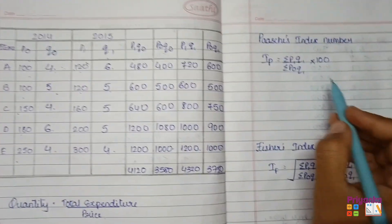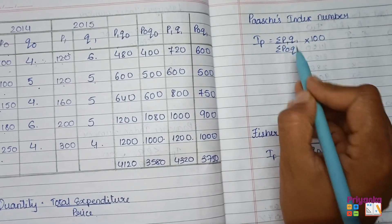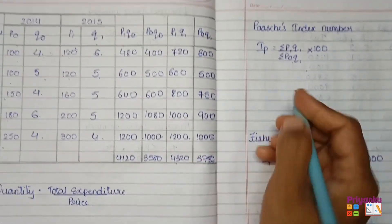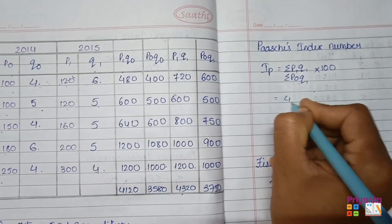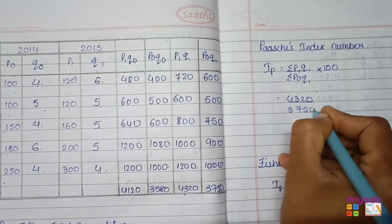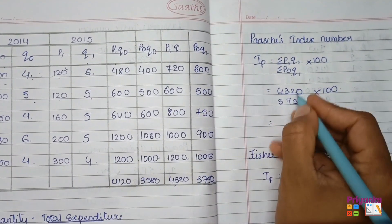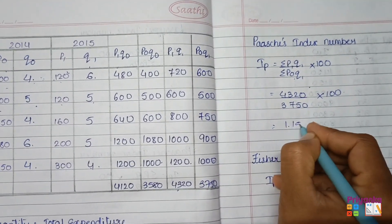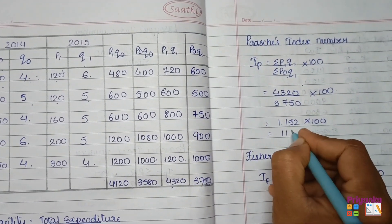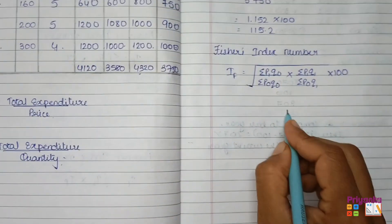The totals of all four columns are: p1q0 = 4120, p0q0 = 3580, p1q1 = 4320, p0q1 = 3750. For Laspeyres index number: (p1q0 ÷ p0q0) × 100 = (4120 ÷ 3580) × 100 = 1.1508 × 100 = 115.08. Wait — for Paasche: (p1q1 ÷ p0q1) × 100 = (4320 ÷ 3750) × 100 = 1.152 × 100 = 115.2.